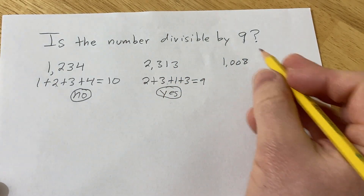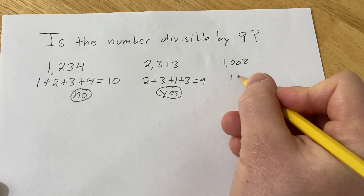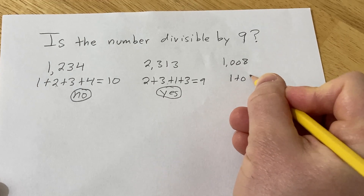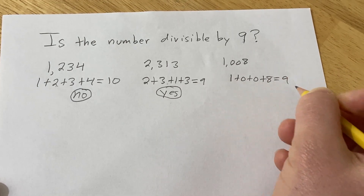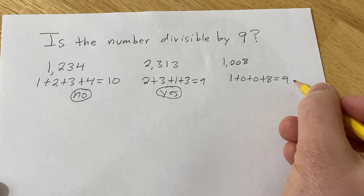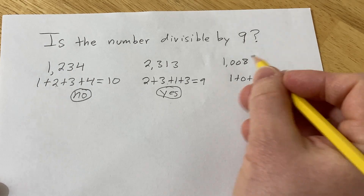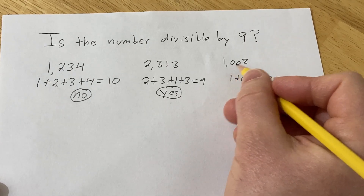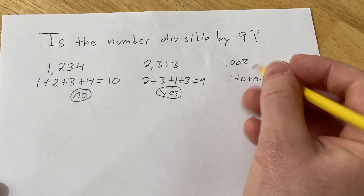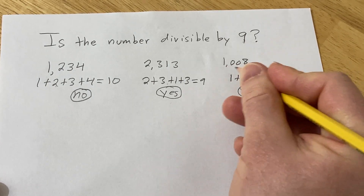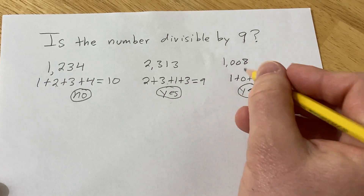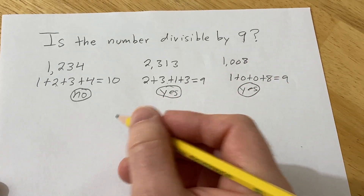How about this one? 1 plus 0 plus 0 plus 8 — that's equal to 9. So 9 is divisible by 9, therefore 9 goes into the number 1,008. The answer is yes — 1,008 is divisible by 9.